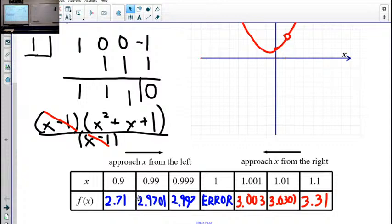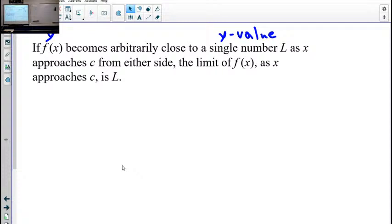This is the idea of a limit, which is the core concept of our first chapter. The limit says if F of X, anytime you see F of X in a definition, you should think Y coordinate. If F of X comes arbitrarily close to a single number L, so L is our Y value. In this case, it was getting very, very close to 3. As X approaches C from either side, X value.